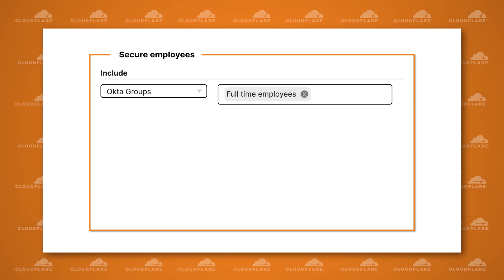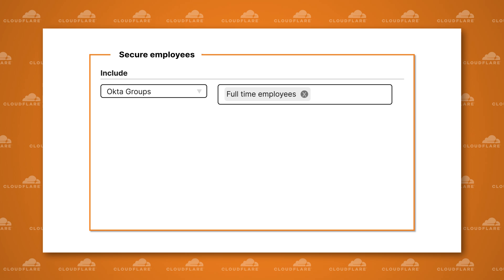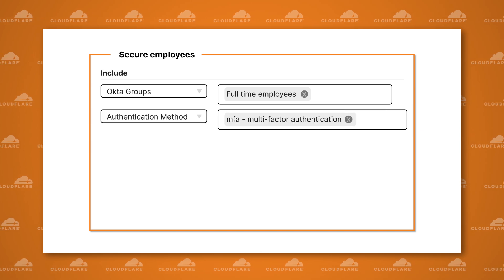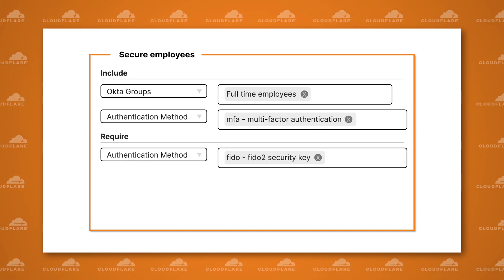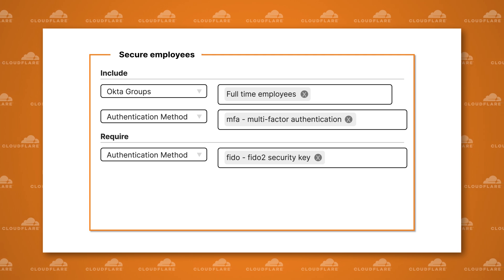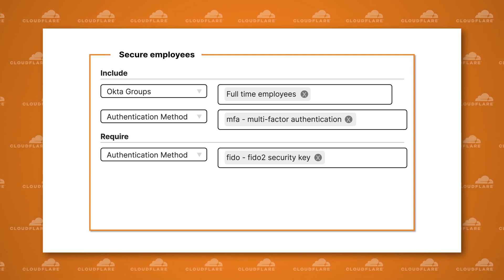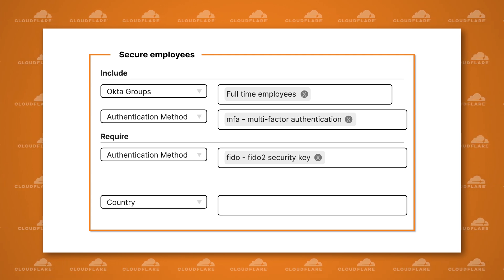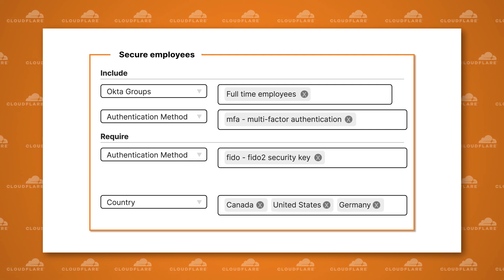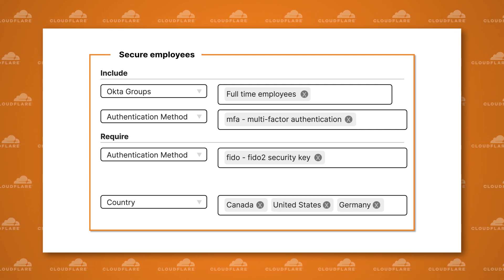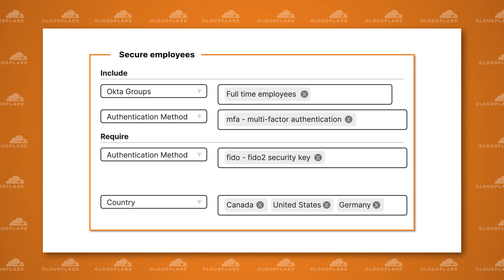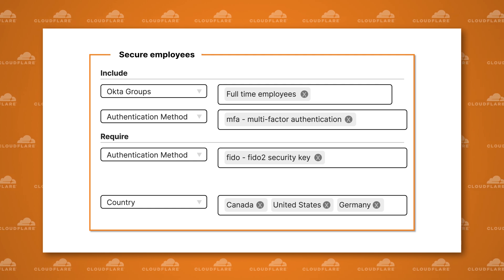The identity service can also tell us how users authenticated, so let's add that to our policy — the requirement that they must have authenticated using MFA, or multi-factor authentication. In fact, let's say they have to specifically use a hard token, such as a FIDO certified key. Finally, we only want users working from Canada, the US, or Germany to access the application, so let's add to the policy that only traffic coming from IP addresses geolocated in those countries is allowed. Now, full-time employees working from somewhere in Canada who have authenticated using a strong set of credentials will be able to access the company wiki.